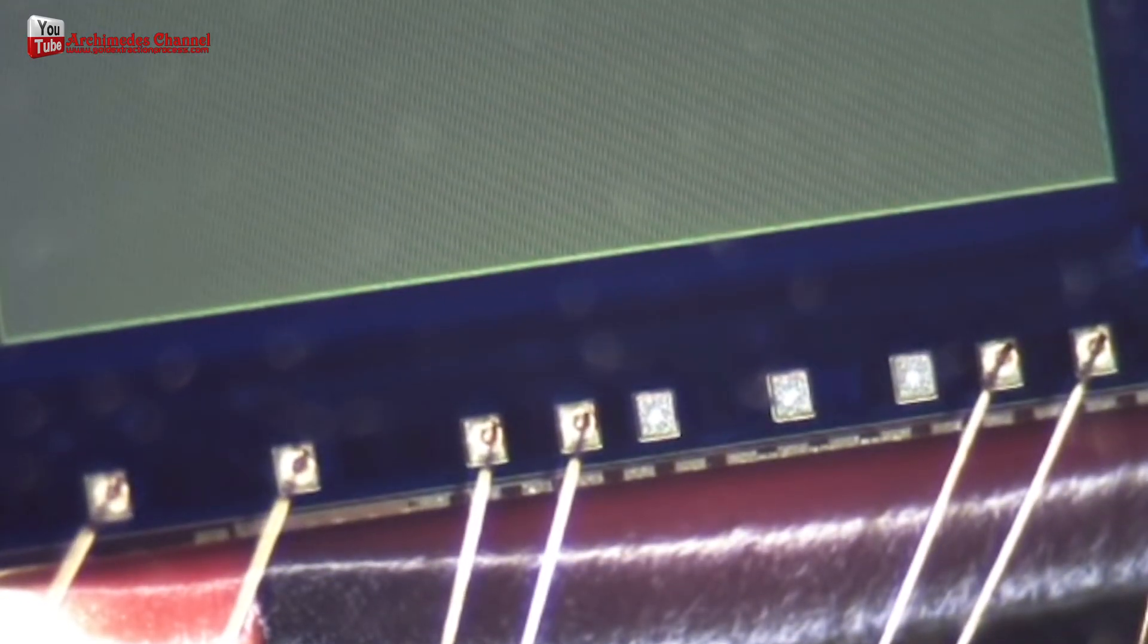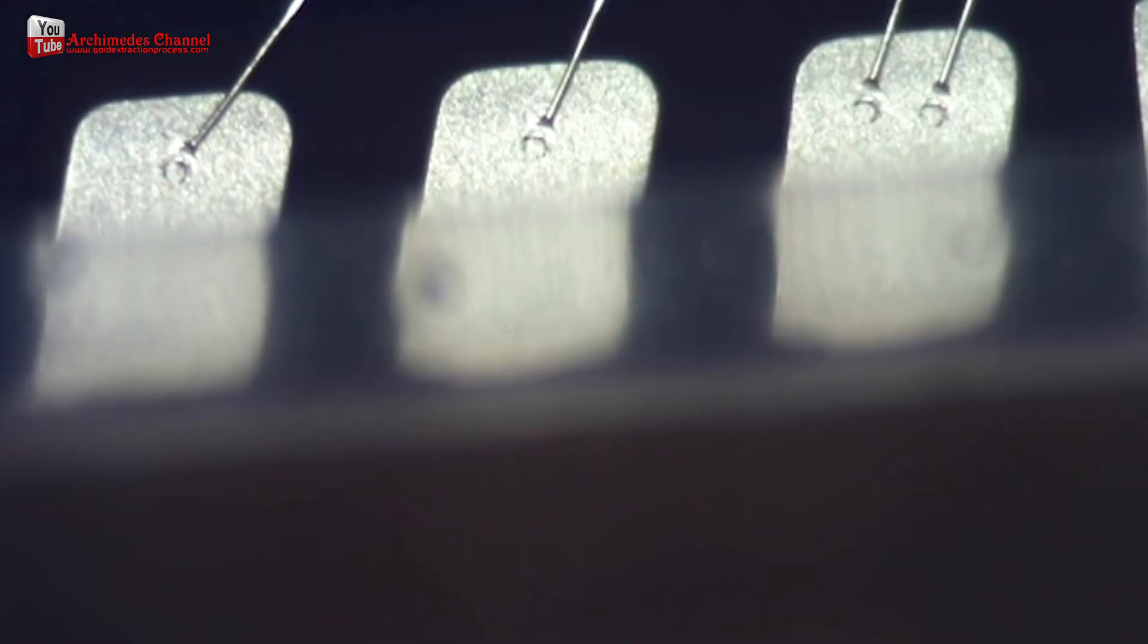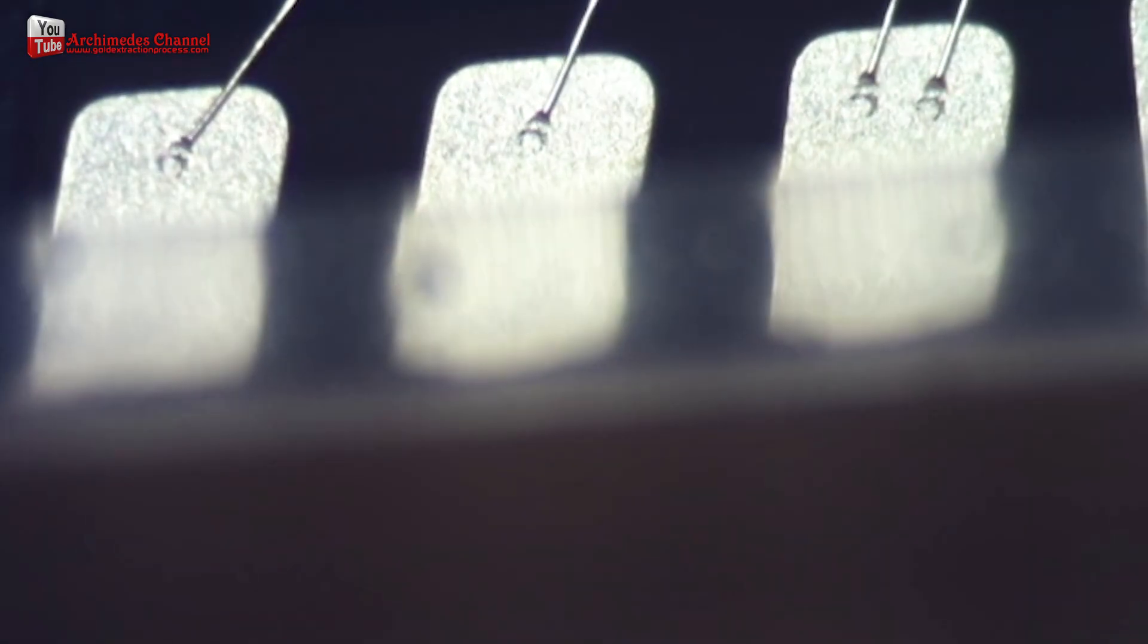To recover the gold wire from electronic parts, you will need to disassemble the parts and extract the gold wire. This can be done manually with tools such as tweezers and soldering iron or with specialized equipment like a wire stripping machine.